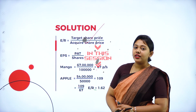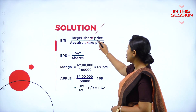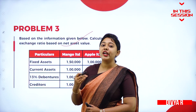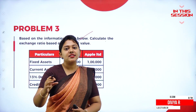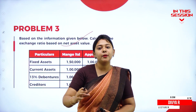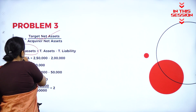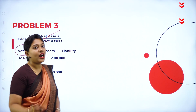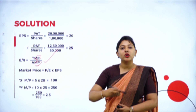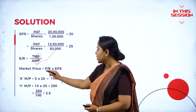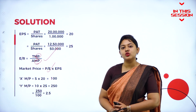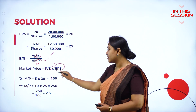What is the formula for exchange ratio? Target share price divided by acquirer share price. There is a separate formula for net assets calculation, EPS calculation, and market price calculation. To calculate net assets, the formula is total assets minus total liabilities. The formula for market price is price-to-earnings ratio multiplied by EPS. Price-to-earnings ratio is given in the question, but EPS is not given.